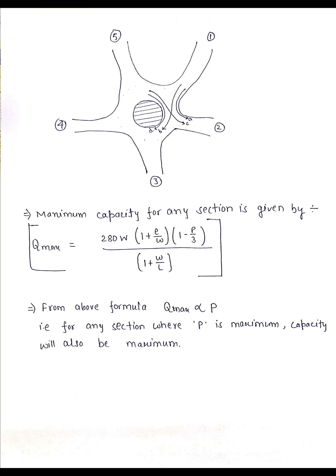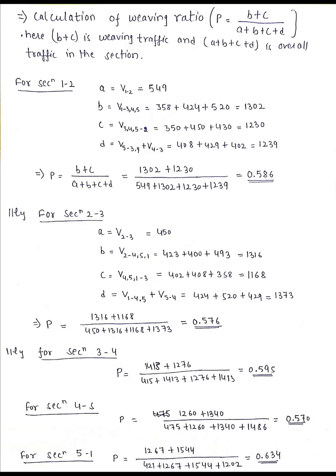For the section which is having the maximum weaving ratio among all, we will directly know that maximum capacity will occur in that section only. So starting with sections 1 and 2, we'll calculate the weaving ratio for all sections.